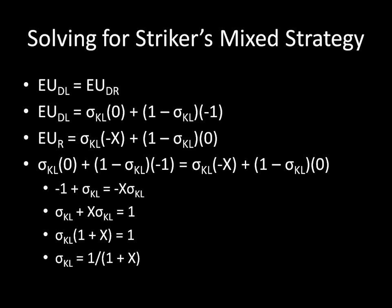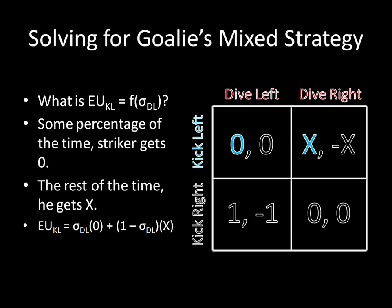That's the kicker's mixed strategy. Now we need to solve for the goalie's mixed strategy. We need to find the expected utility for the striker of kicking to the left and of kicking to the right, then find which probability of the goalie diving left leaves the striker indifferent. The expected utility of kicking to the left for the striker is: with probability sigma_dl (goalie dives left) the striker gets zero; with probability (1 - sigma_dl) the goalie dives right and the kicker earns x — reflecting that even when the goalie guesses wrong on a left kick, he only scores with probability x.